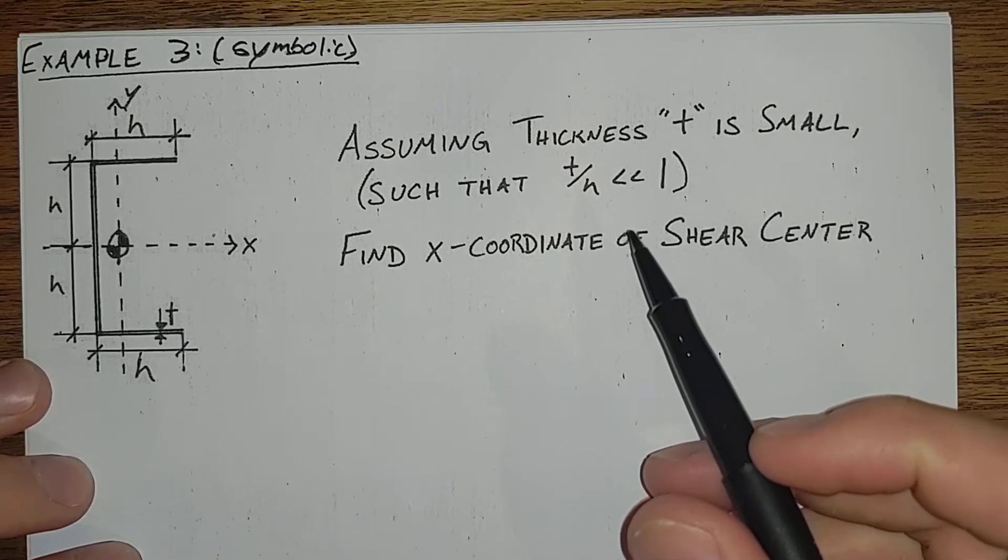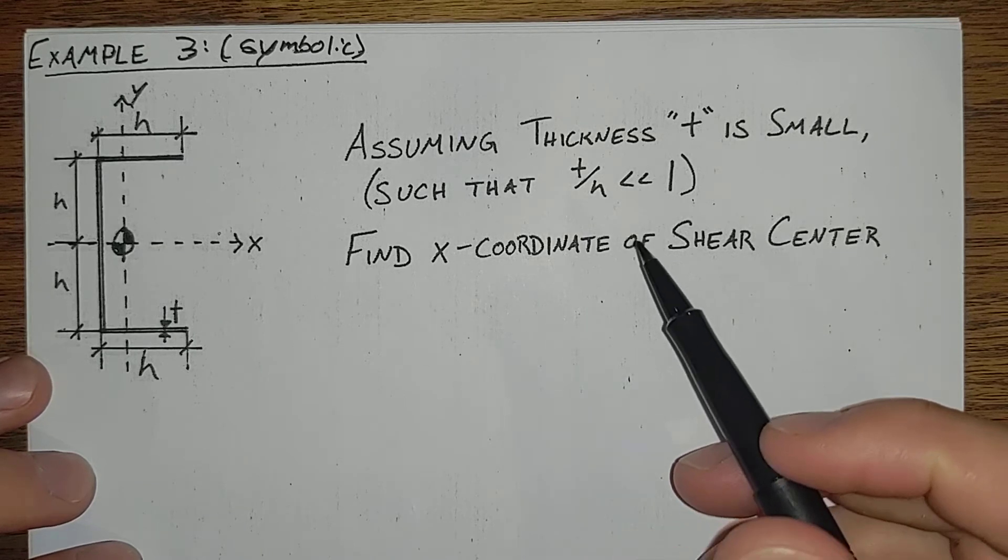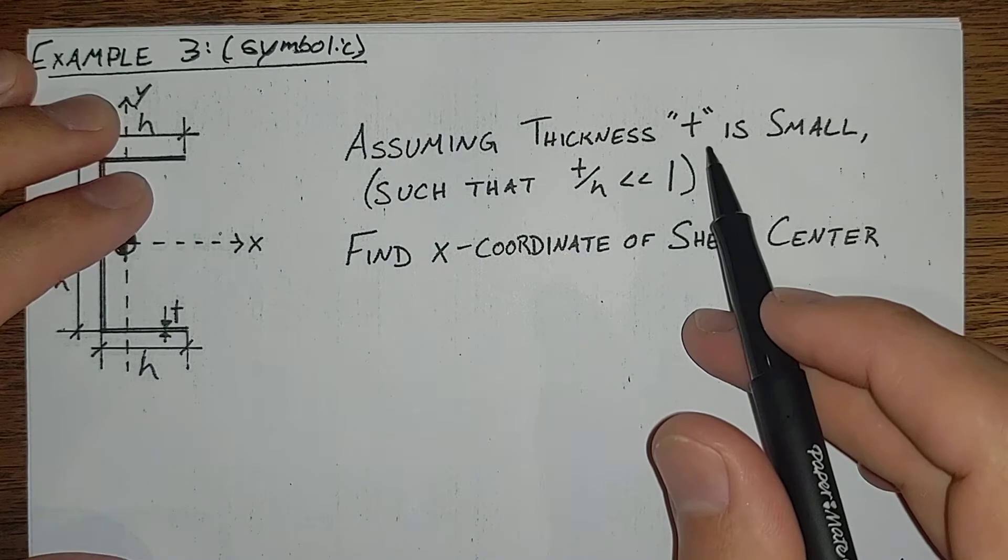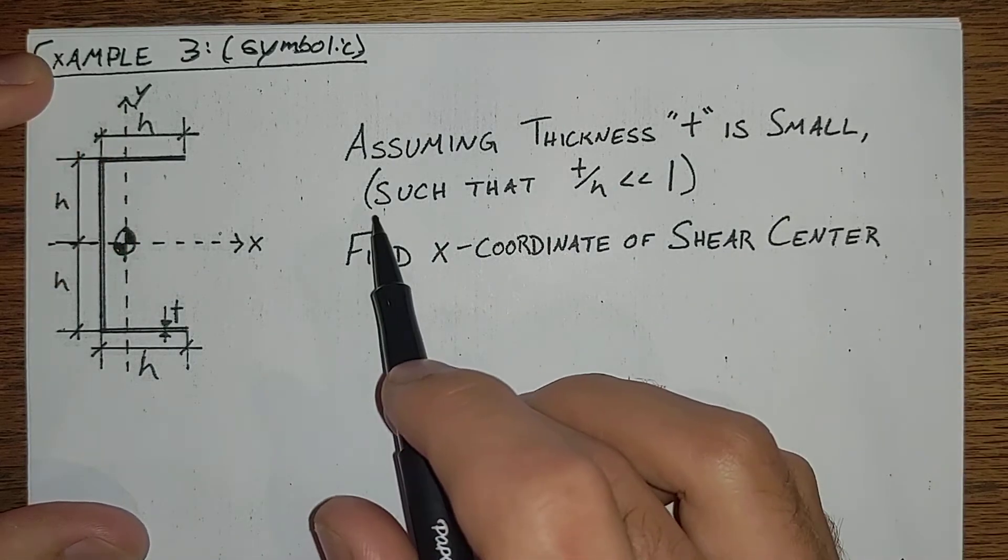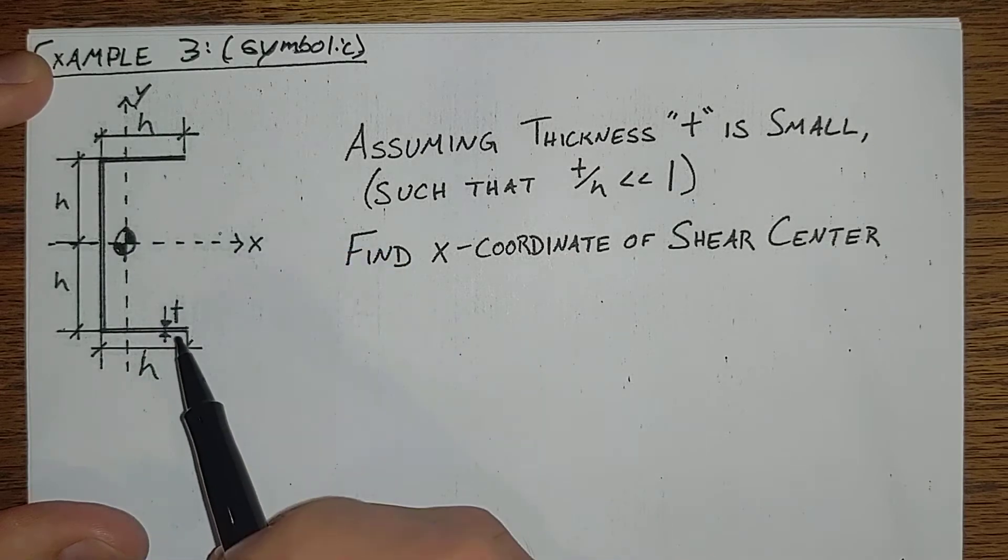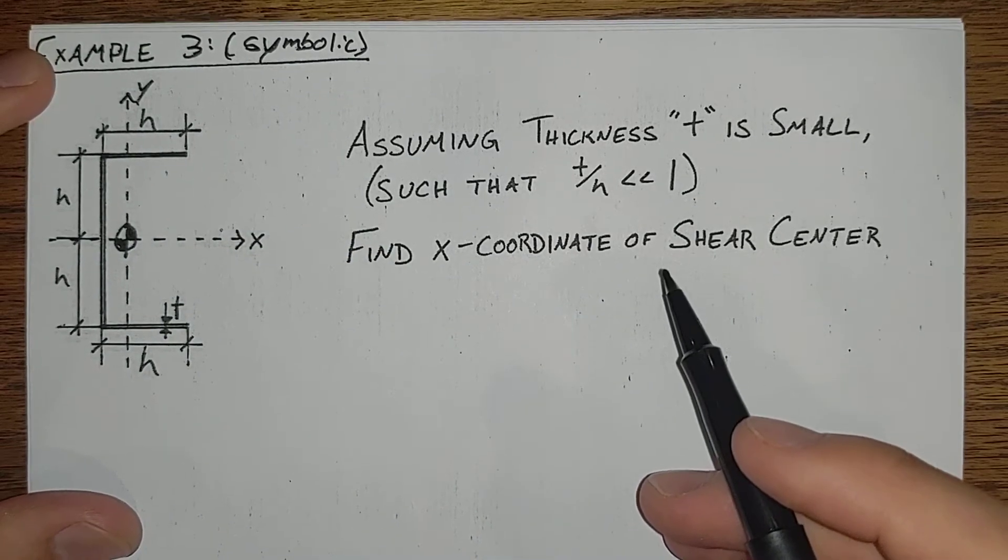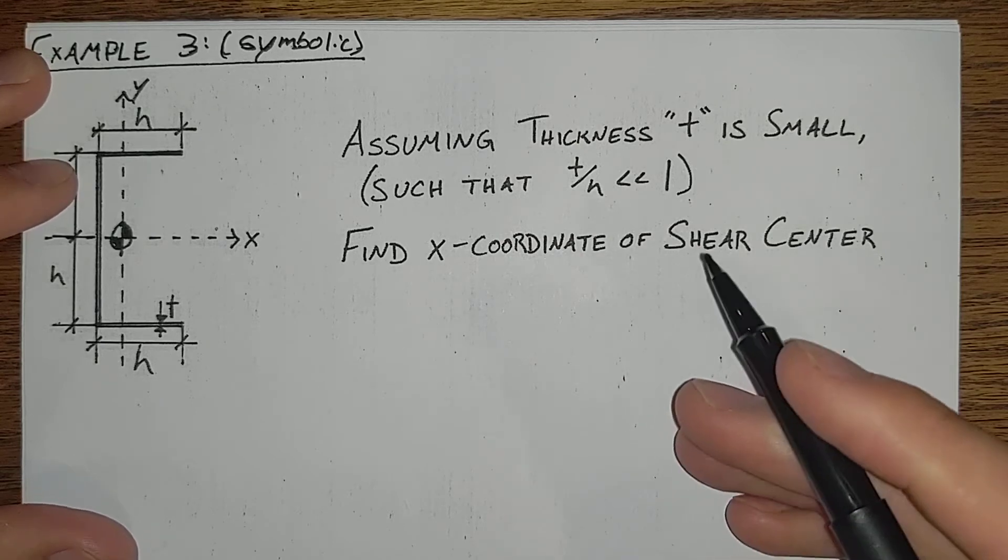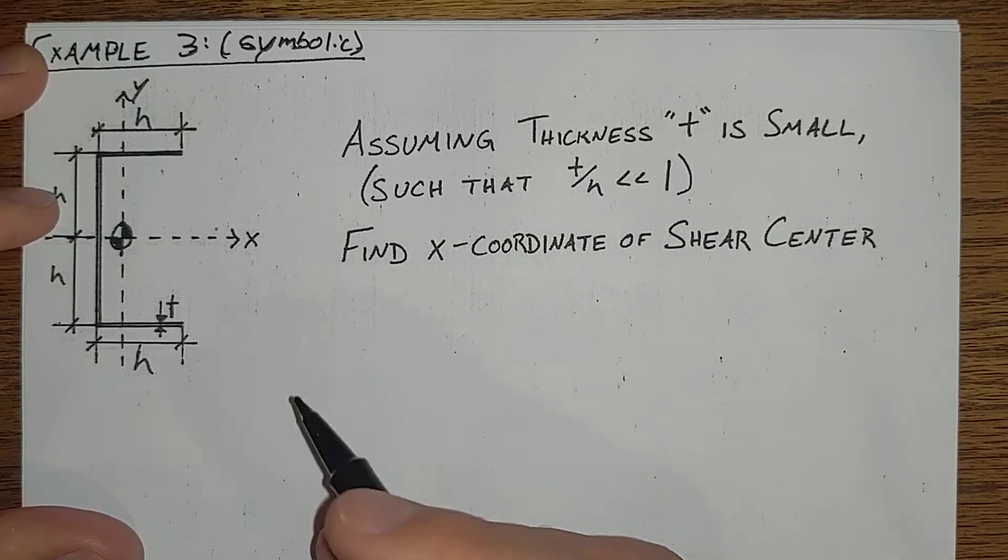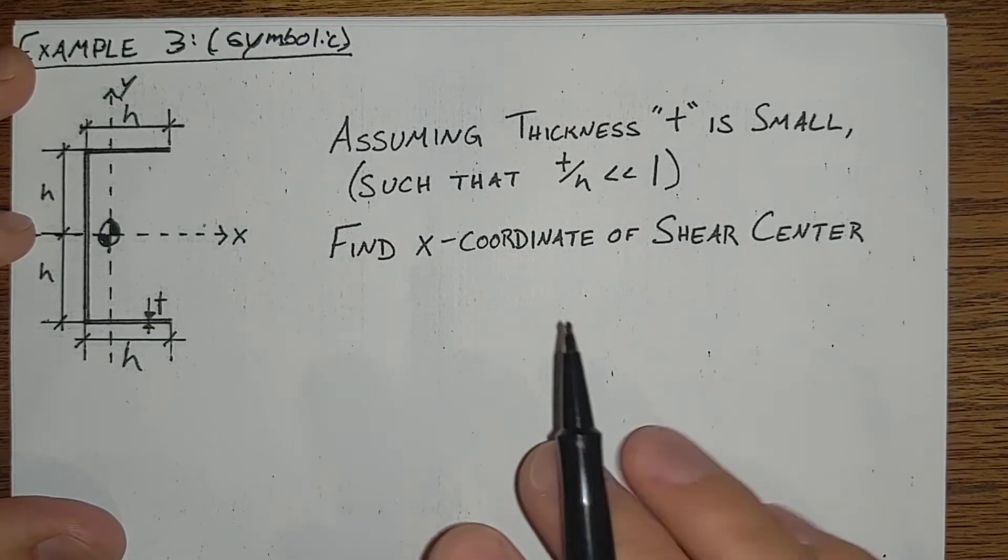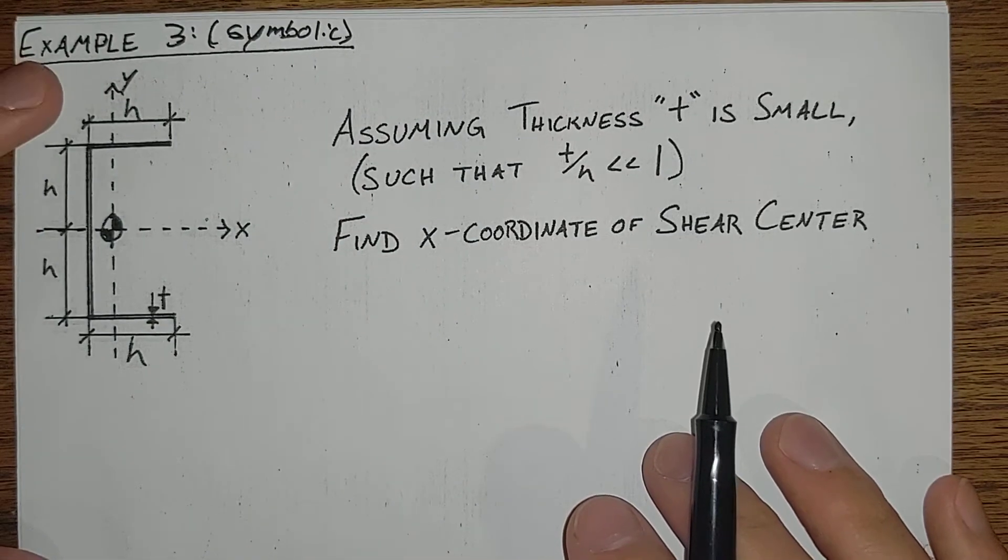So to investigate some of these more complicated shapes, we have to make certain assumptions. If we assume that the thickness t is small, that allows us to eliminate higher order terms based on the thickness of our shape. It won't give you an exact answer, but it will let us draw some conclusions about the locations of the shear center based on the overall geometry of a shape, and let us do it without computer tools.